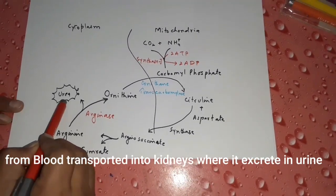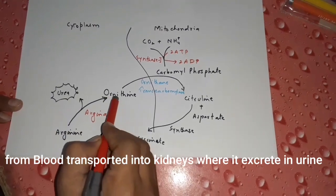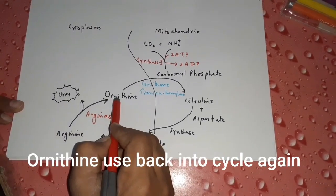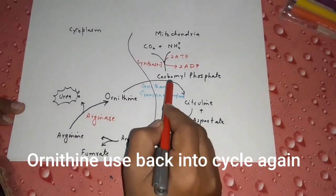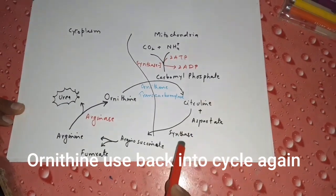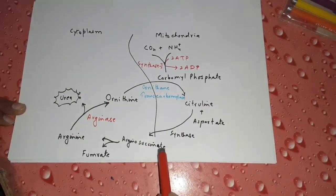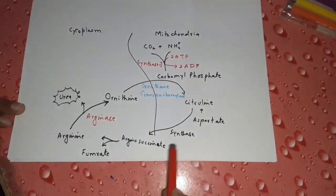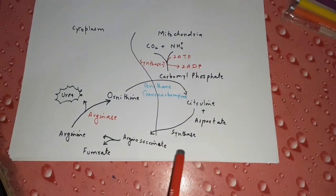The urea produced is a soluble compound. It dissolves in the blood and is transported to the kidneys, where it is excreted in the urine. The ornithine is recycled and restarts the cycle by combining again with carbamoyl phosphate. This was a brief overview of the urea cycle.